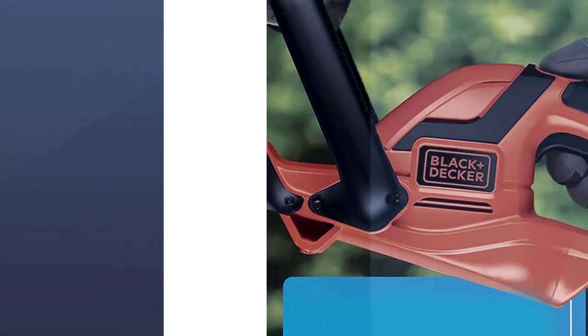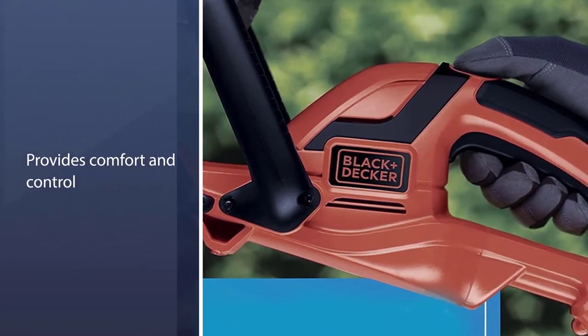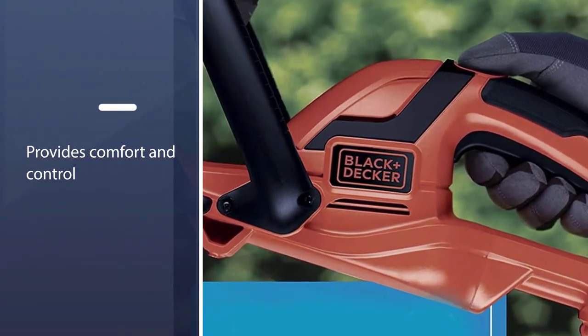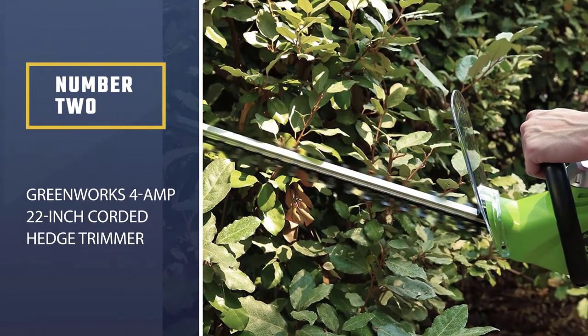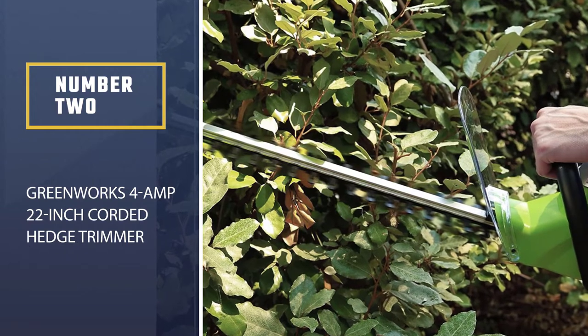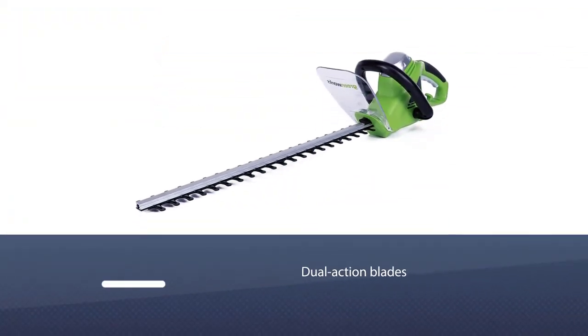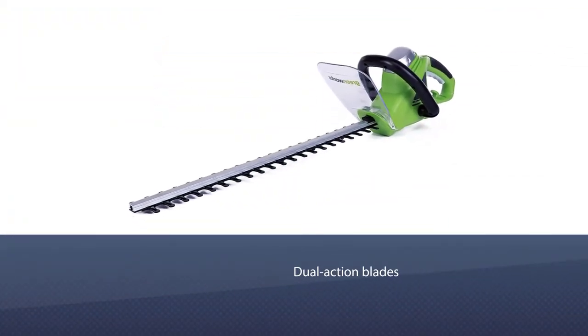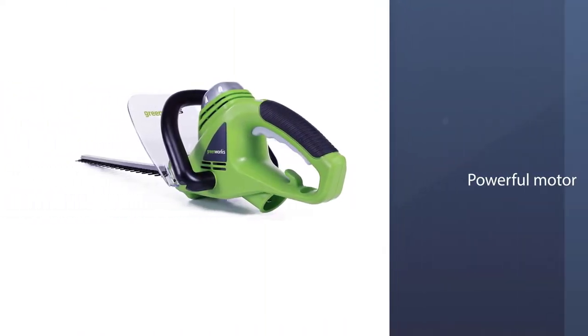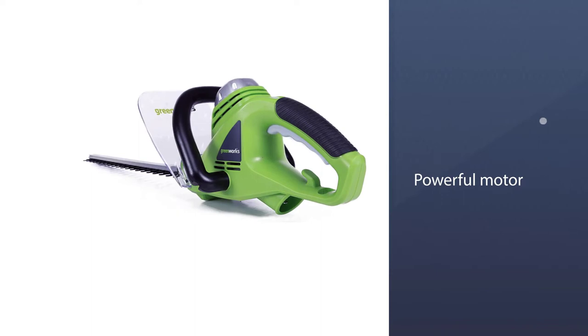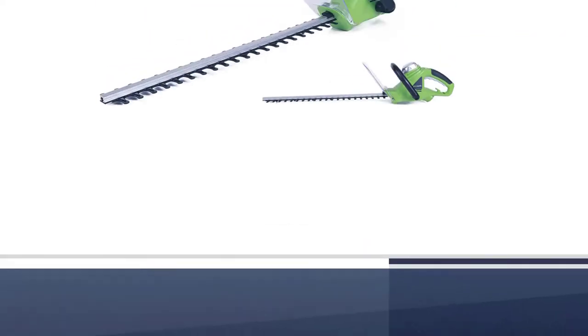Number two: Greenworks 4 amp 22-inch corded hedge trimmer. At seven pounds, this corded trimmer is slightly heavier than the others on this list. However, it's still lightweight enough for anyone to use. As you begin slicing through twigs, branches, and such, you'll notice how easily the 22-inch dual action blades glide through the foliage.